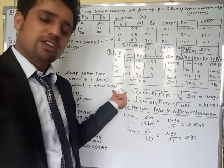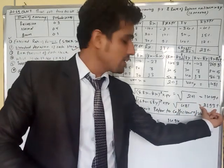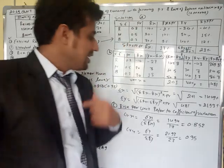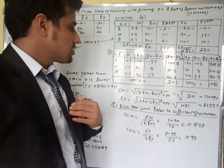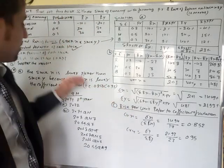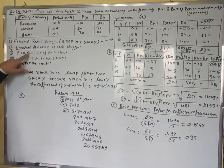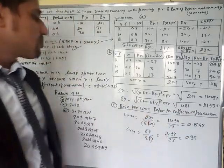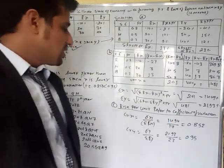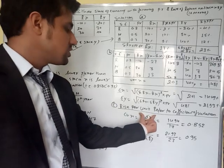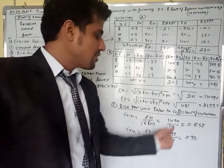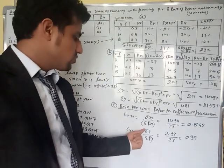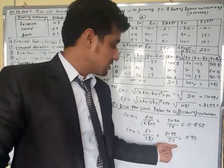Stock Y is higher risk than stock X because standard deviation of stock Y is 21.93 and stock X is 14.49. If we only use standard deviation to decide, we would suggest investing in stock X. But the question requires risk per unit — the coefficient of variation. CV of X = sigma X ÷ R̄X = 14.94 ÷ 17 = 0.852. CV of Y = sigma Y ÷ R̄Y = 21.93 ÷ 23 = 0.95.